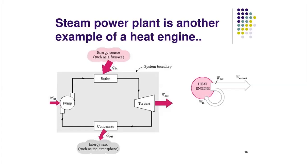A heat engine is a device which operates on a thermodynamic cycle and produces work by transfer of heat. The net transfer of heat results in the production of work. Another well-known heat engine is the steam power plant, which is also an important thermodynamic system. If you look at the total system of a steam power plant, this becomes the system boundary, and you need to look at the energy flows across it.